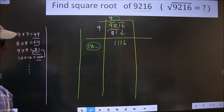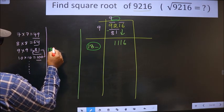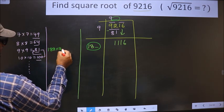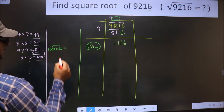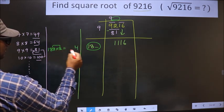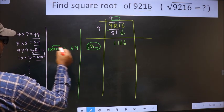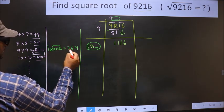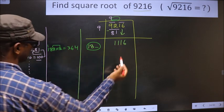If I take 2, that is 182 into 2. These two numbers should be same. So 2 into 2, 4. 2 into 8, 16. 2 once 2 plus 1 is 3. This is far from this.